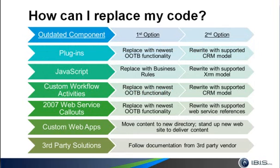For a plugin, you may be able to replace it with out-of-the-box functionality. When CRM 2011 came out, it was full of new feature requests from CRM 4.0, and similarly CRM 2013 is full of new feature requests from 2011. So after two generations of the product, what had to be custom before could be out-of-the-box now. And if it's not, you'll have to rewrite it with supported CRM code. Same goes for JavaScript. In CRM 2013, we have what's called business rules, which are a user-friendly way of programming your forms, and those can often replace what you used to require JavaScript. If it's not supported yet, it may be supported in a new roll-up, but until then you'll have to rewrite your JavaScript with an XRM model code.